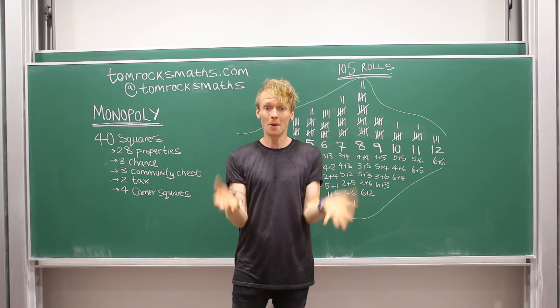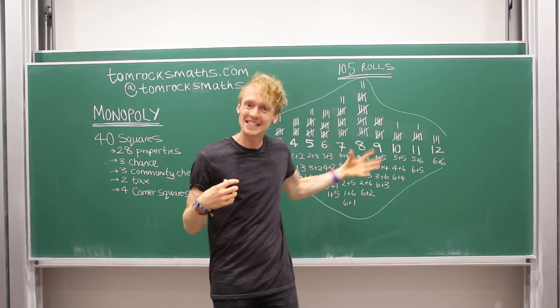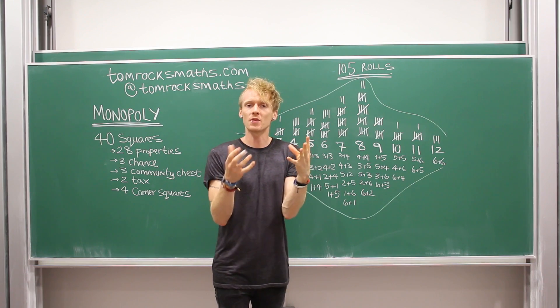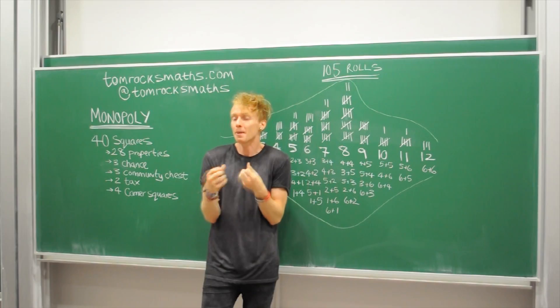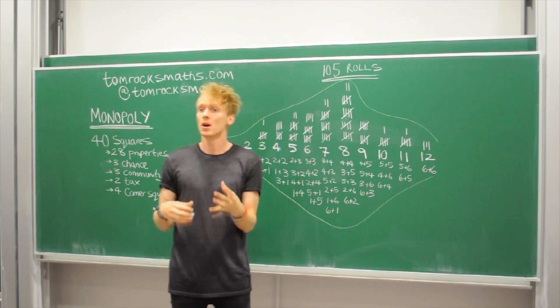Now back to Monopoly, the purpose of this demonstration of our question. So if you remember we found that jail is the square that a player is most likely to land on during their turn.